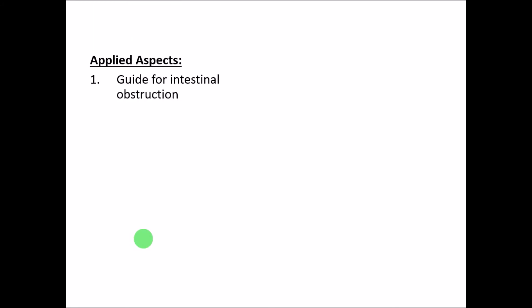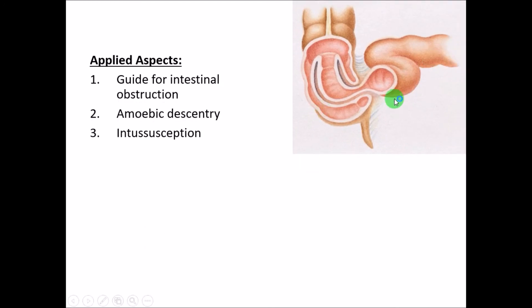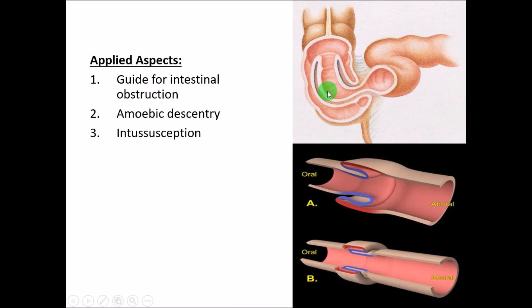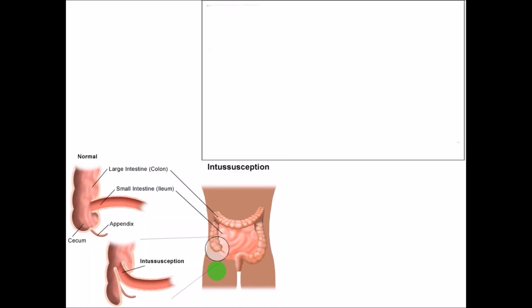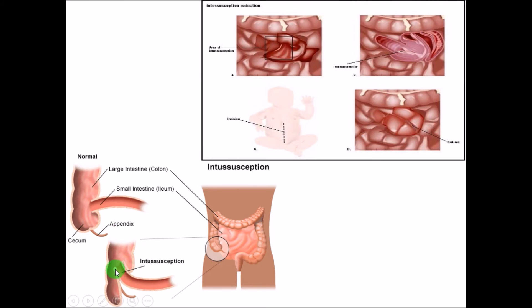Applied aspects: the cecum acts as a guide for intestinal obstruction, especially leading to intussusception as well as amoebic dysentery — it is a common site for amoebic dysentery. In intussusception, one part of the tube enters into the other part of the tube, leading to intestinal obstruction. This is commonly seen at the cecum, as shown in this picture.